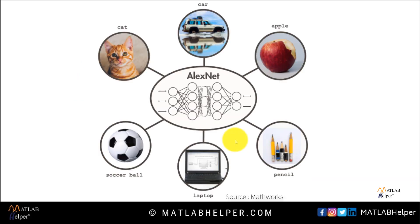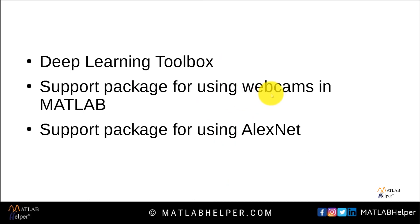AlexNet. When we create a neural network, we have to first train it and then use it for testing. AlexNet is a neural network that is already trained on more than a million images. Hence, it can directly be used for classifying images into a thousand different categories including keyboard, computer mice, etc. In this task, we'll use it to identify objects in images from a webcam installed on a desktop. Apart from MATLAB, we'll also be requiring a deep learning toolbox, a support package for using webcam, and a support package for using AlexNet.